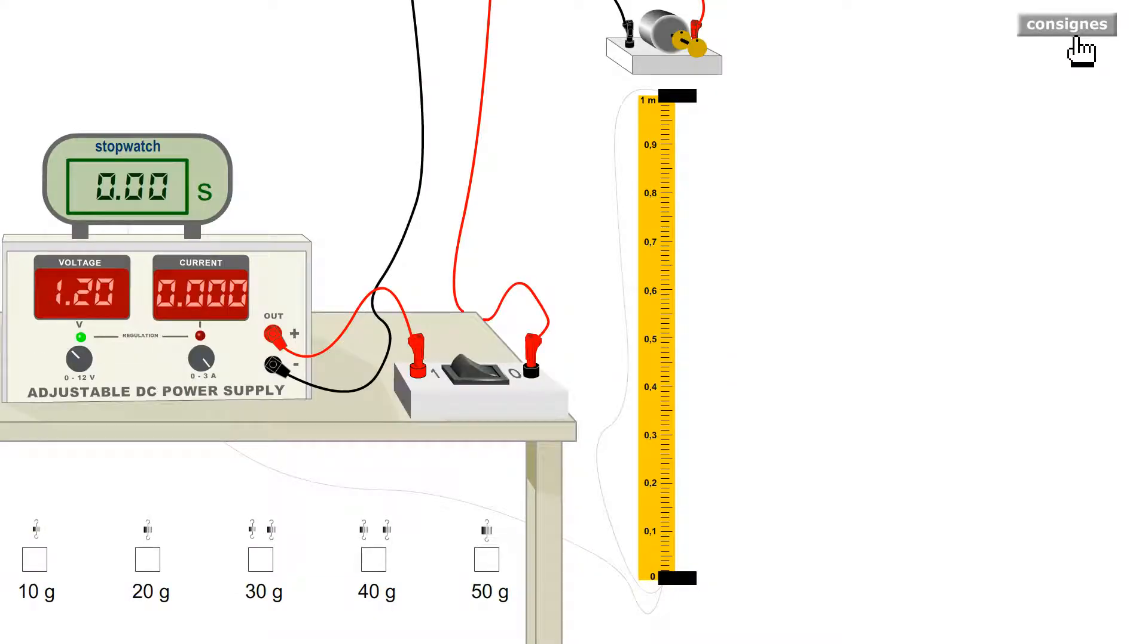Here is the apparatus. The motor is here, powered by a DC supply. The voltage will be stabilized at 1.2 volts, noted here throughout the experiment. However, the current will only be displayed when the switch is closed.